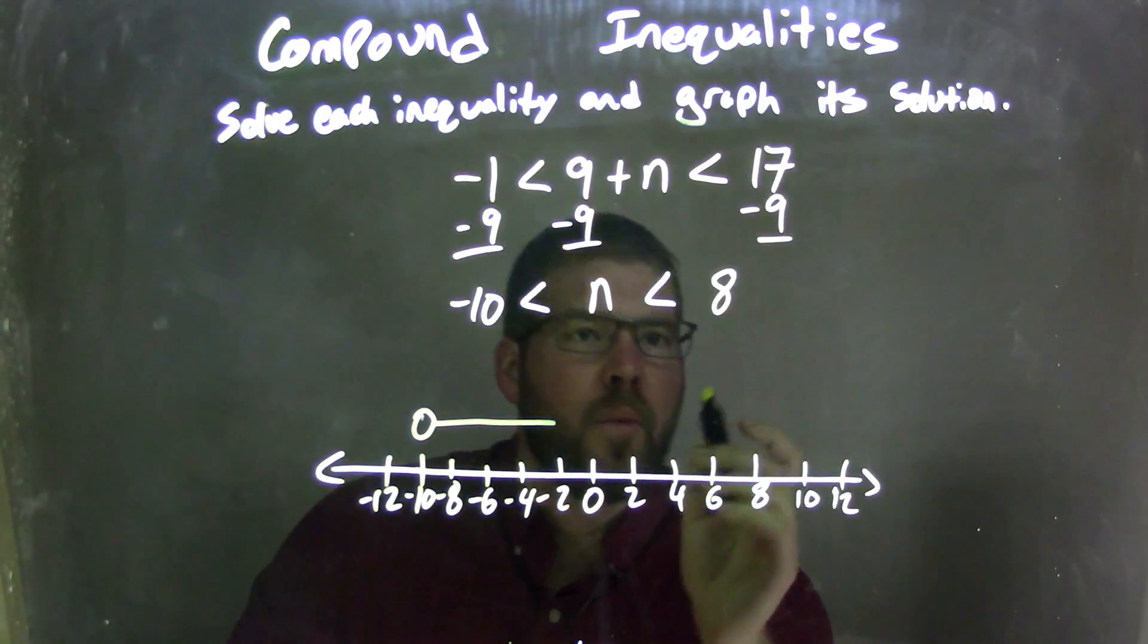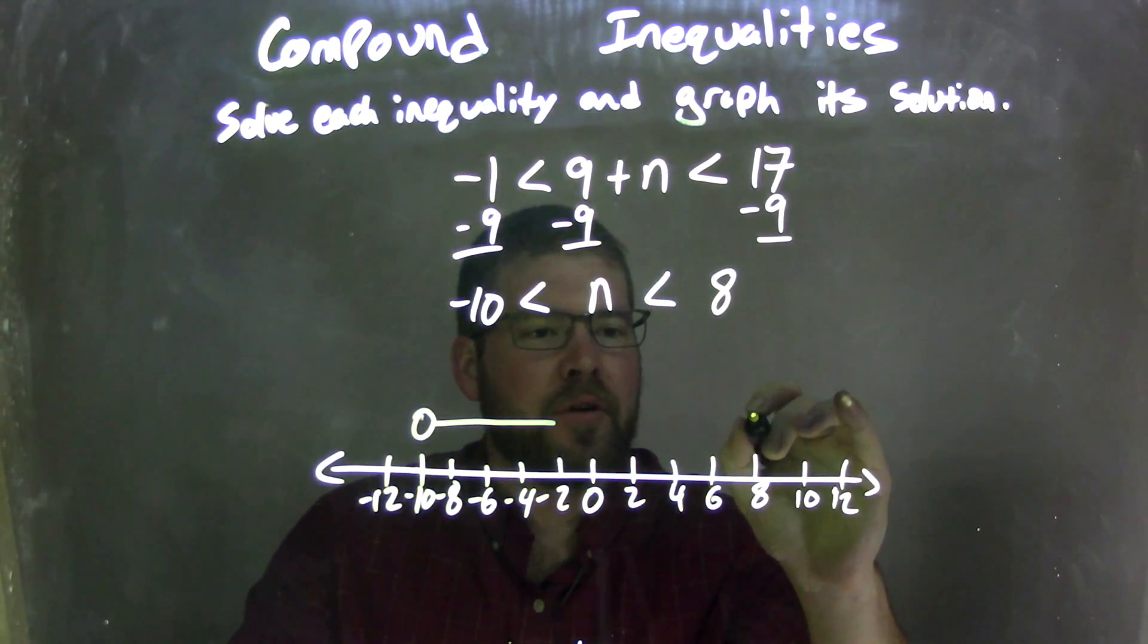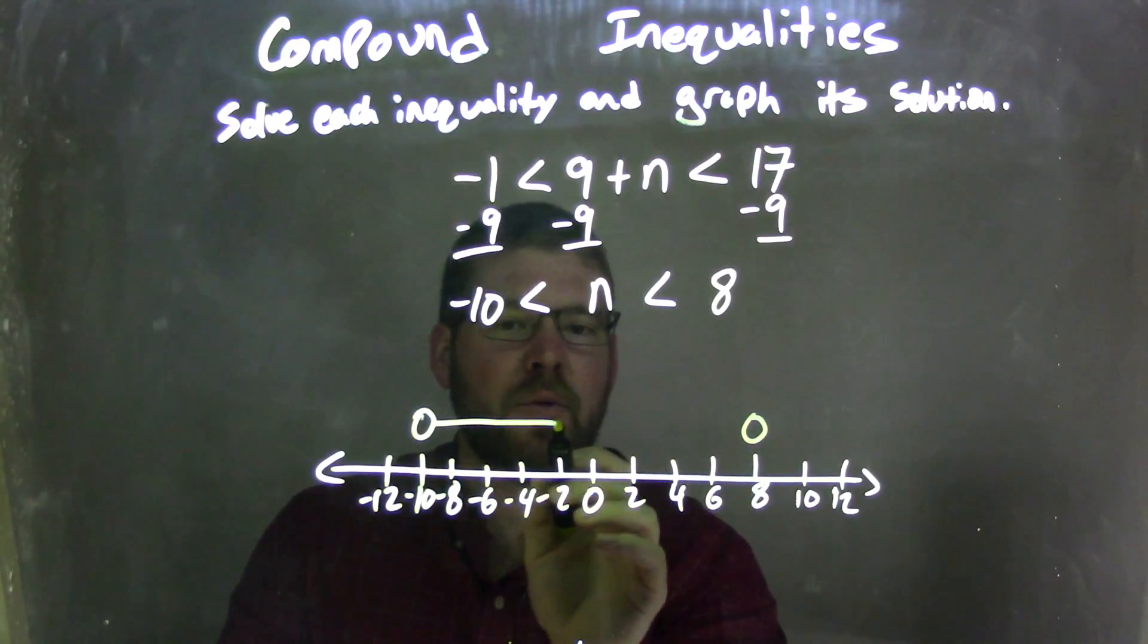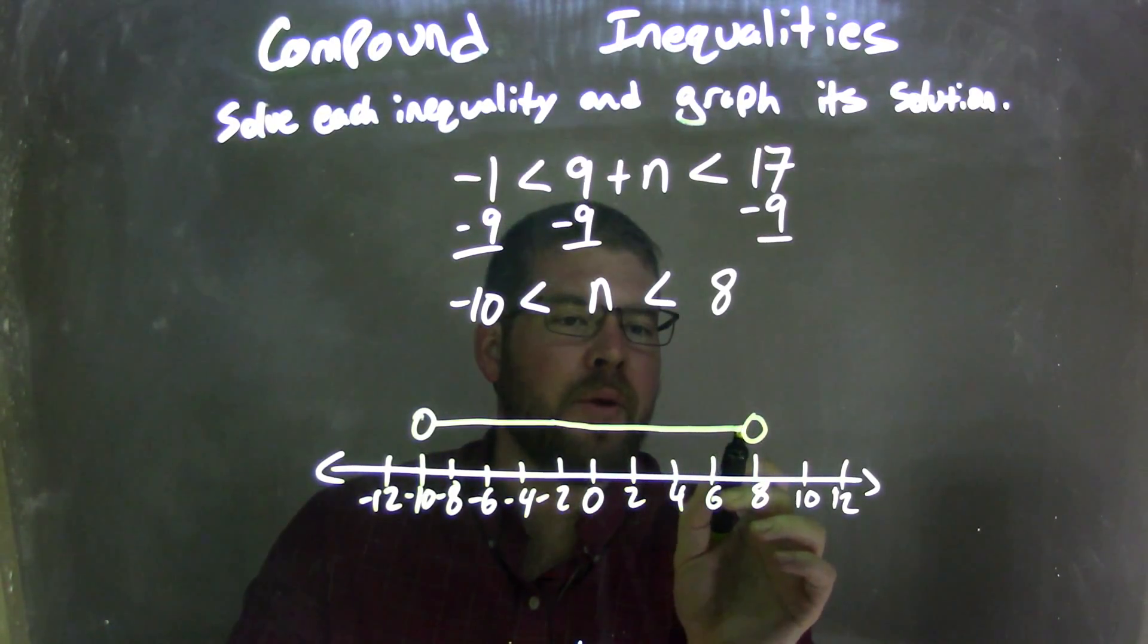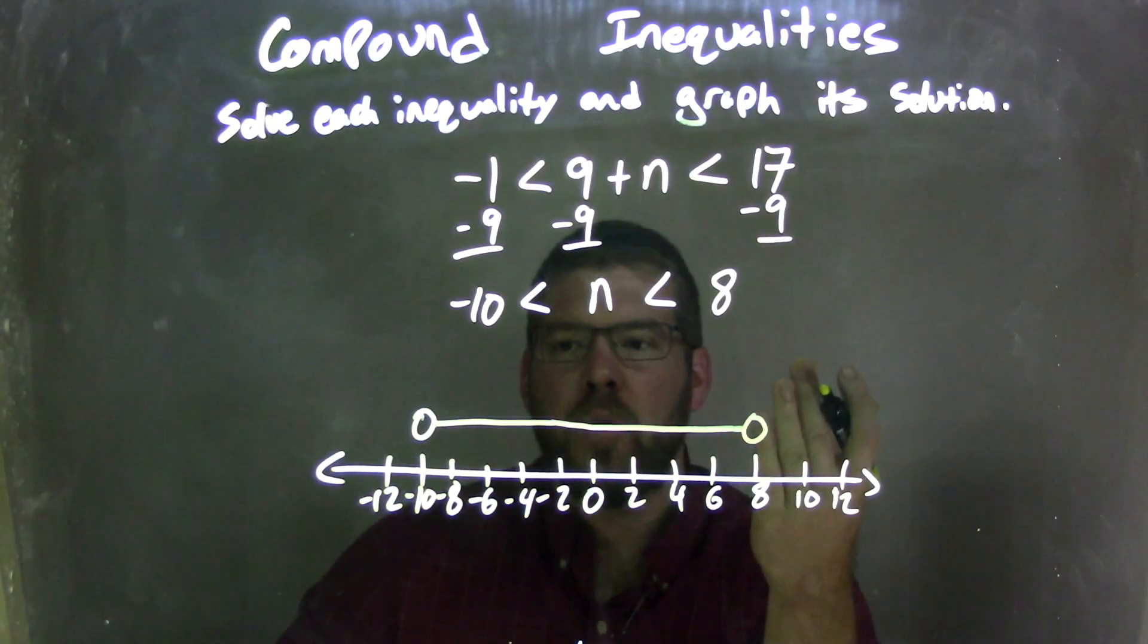Up to a point where it says n is less than 8, so 8 has to have an open circle as well. And n is less than that, so we bring this arrow, the line, all the way up to 8. And there we have it. We have our graph here that matches our inequality.